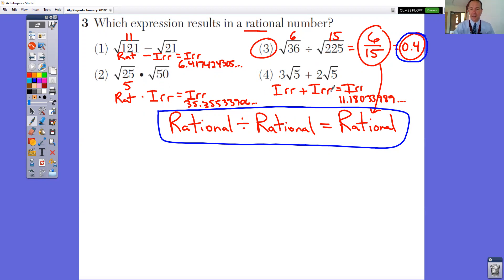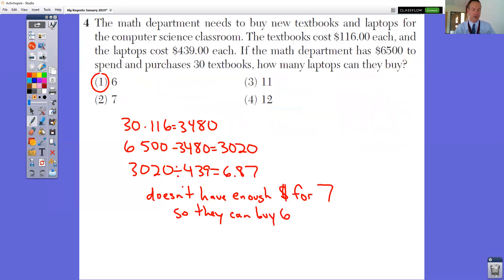If you go through and type in any of these other ones, you're going to get a big, long, ugly decimal that doesn't repeat, that doesn't terminate. Those are irrational numbers. Notice that we have a rational minus an irrational, that will always give you an irrational. Rational times an irrational, that will always give you an irrational. Irrational plus an irrational will always give you an irrational. But anytime that we have two rationals like that and we're dividing, that will always give you a rational number.